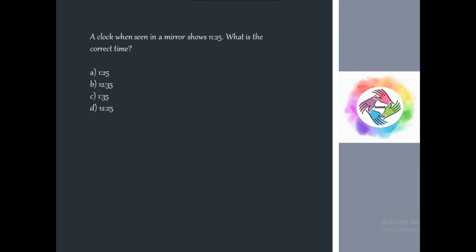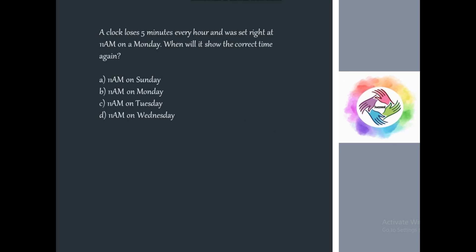Problem: A clock when seen in a mirror shows 11:25. What is the correct time? Using the mirror image formula, 11:60 − 11:25 = 12:35. The correct time is 12:35.